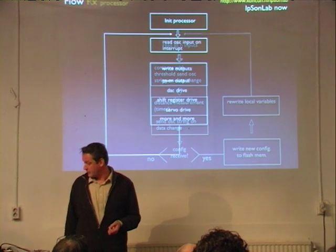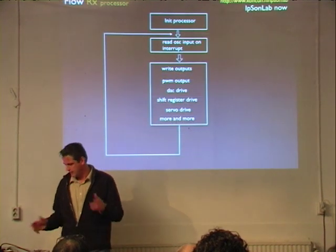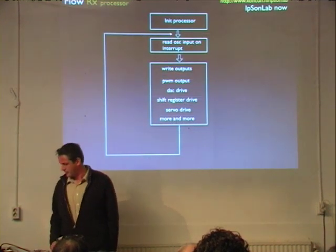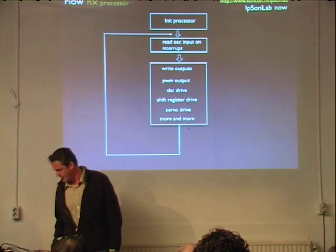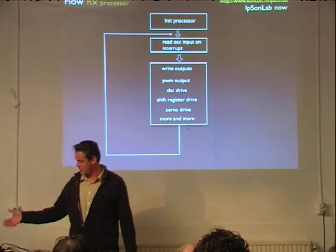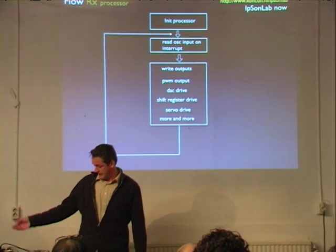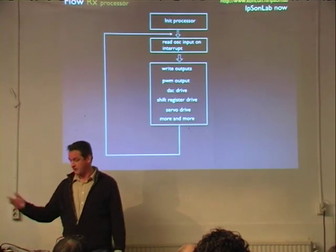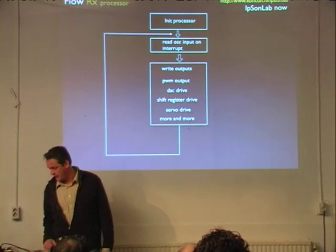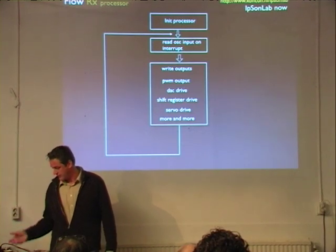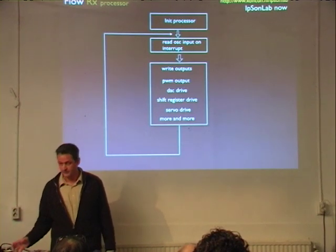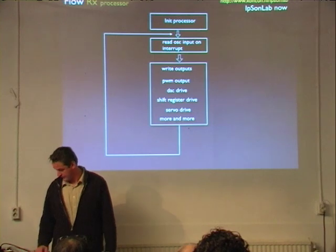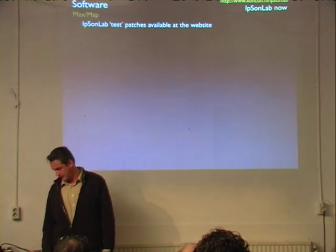The output process — a very global flow chart. It just does initialization of the processor, then continuously reads or waits for an interrupt, like 'hello, there's a new package,' and does its output.